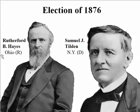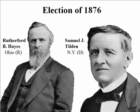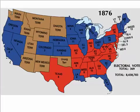The election of 1876 involved two men. Rutherford B. Hayes from Ohio was the Republican candidate for president, and Samuel J. Tilden was the New York candidate for president of the United States. Both of them were governors of their particular states.